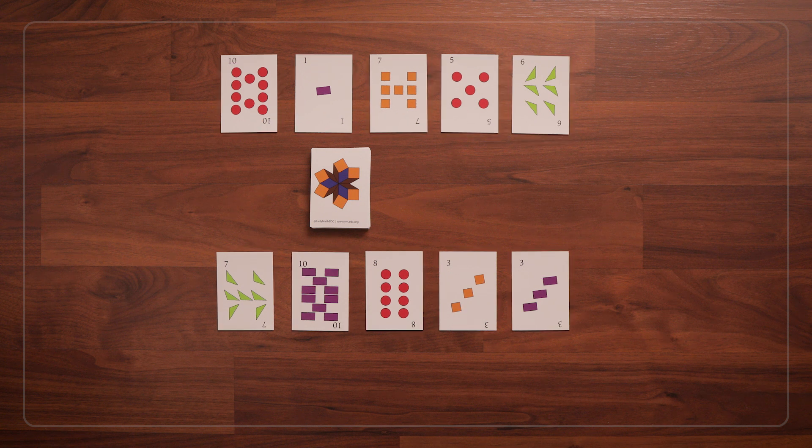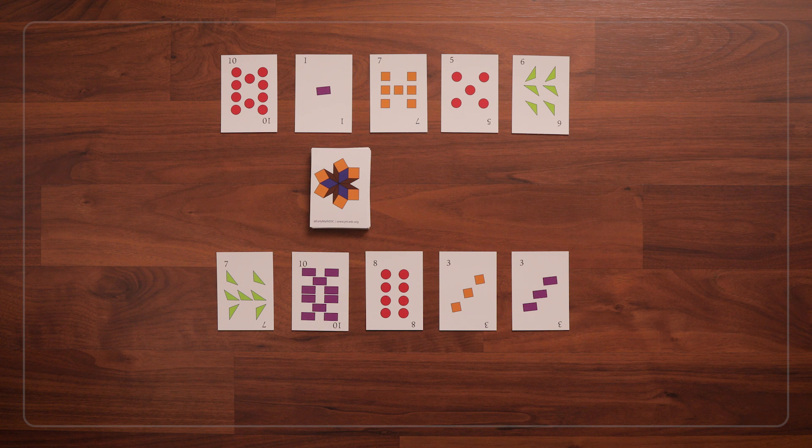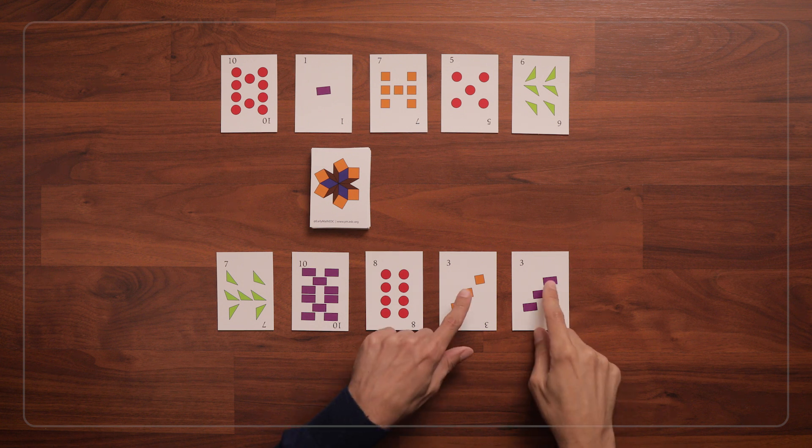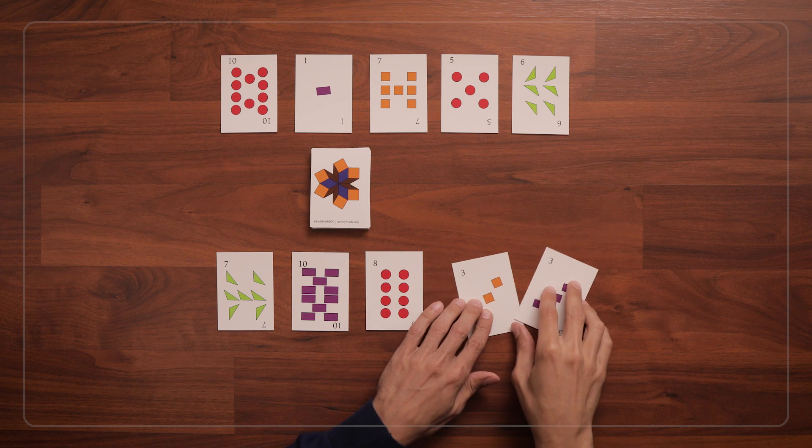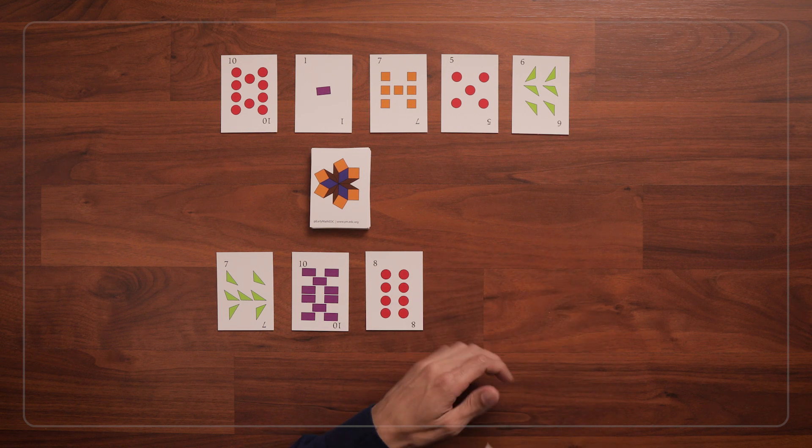We'll start out trying to make matches based on number. So I'm going to look at my cards and see if I have more than one of any of these numbers. And I see that I do have two 3's, so I'll put my matching 3's off to the side.